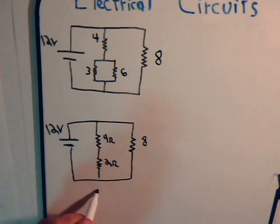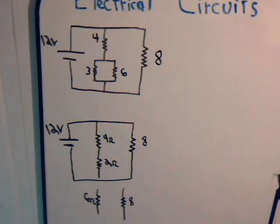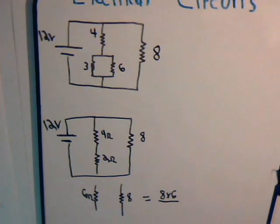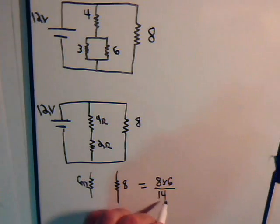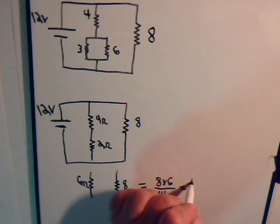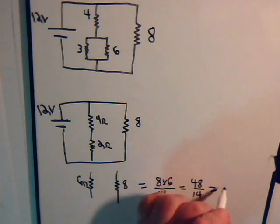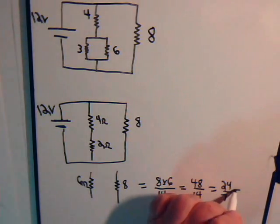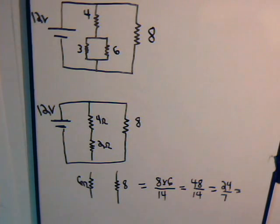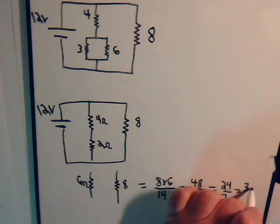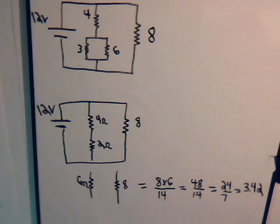So we have 6 ohms in parallel with 8 ohms. So that equivalent resistance is going to be 8 times 6 divided by 8 plus 6. So we have 8 times 6 is 48 over 14, which is 24 over 7, that's 3 and 3 sevenths. So I think that's the same as 3.42.